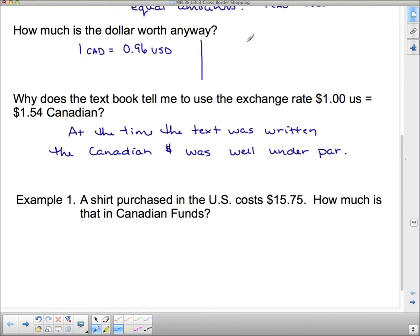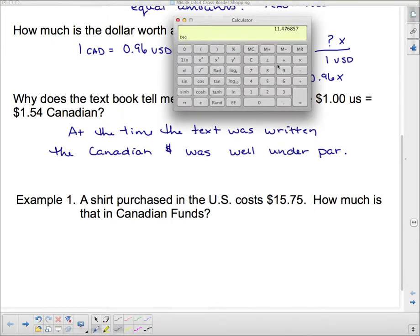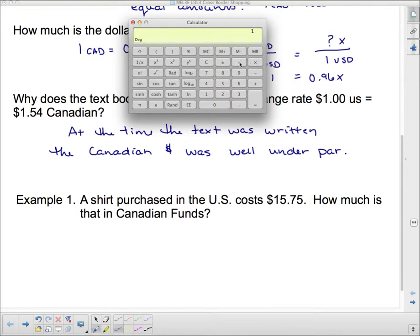And so we can actually set this up, and we can use cross-multiplying to figure it out. We'll put an X here, and when we cross-multiply, we get 1 times 1 is 1. And over here, 0.96X. And we'll divide both sides by 0.96. So, let's pull up my calculator here, and go 1 divided by 0.96 is $1.04.